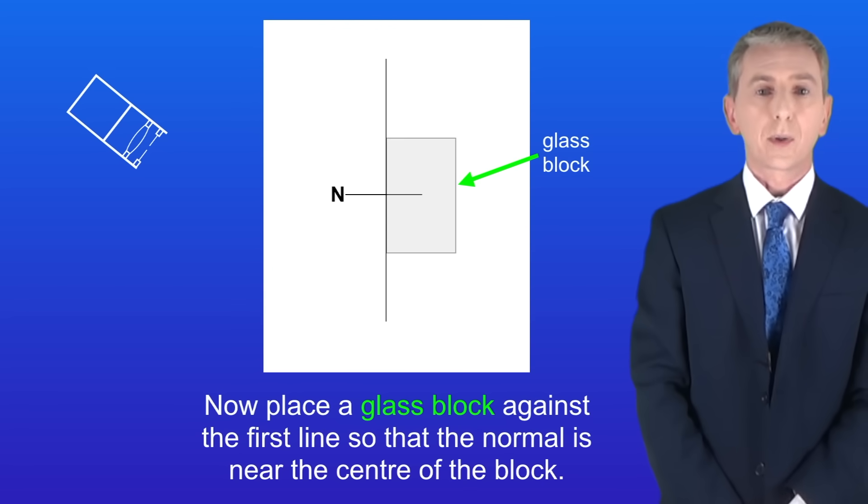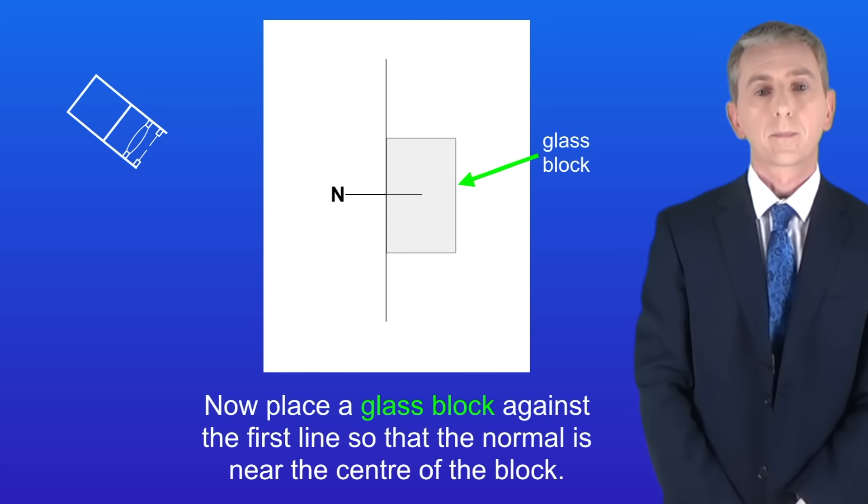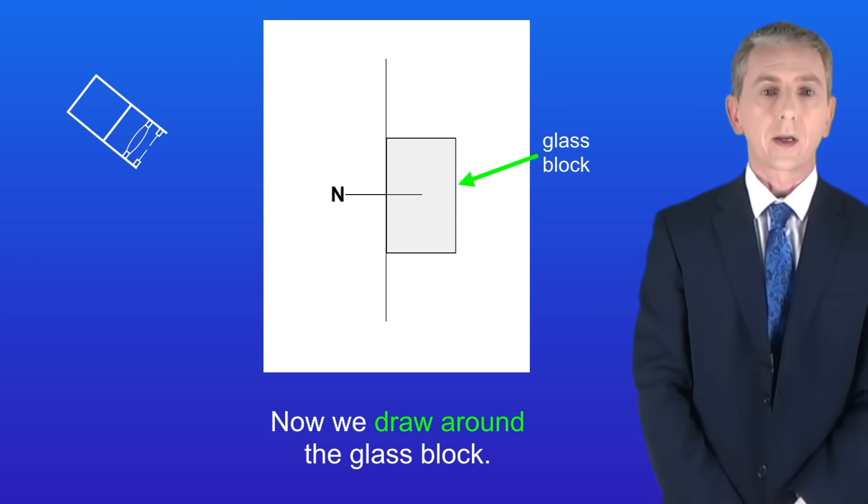We now place a glass block against the first line so that the normal is near the center of the block like this. Now we draw around the glass block.